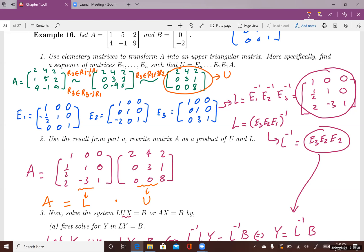This process is called factorization, factorizing a square matrix. You're given a square matrix and you factor that matrix into two different factors, L and U, where L is a lower triangular matrix and U is an upper triangular matrix.